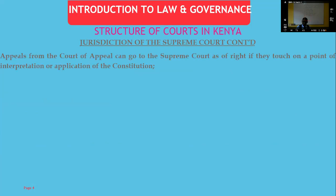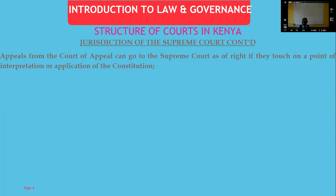Appeals from the Court of Appeal can go up to the Supreme Court as of right in matters where they touch on a point of interpretation or application of the Constitution. Where an issue being appealed against touches on interpretation or application of the Constitution, it can go to the Supreme Court as of right — meaning you do not need to seek leave in order to appeal. We're going to see how else you can approach the Supreme Court where the issue is not one of constitutional interpretation or application.